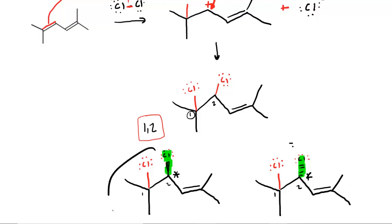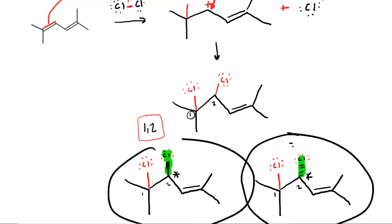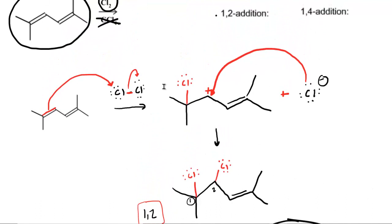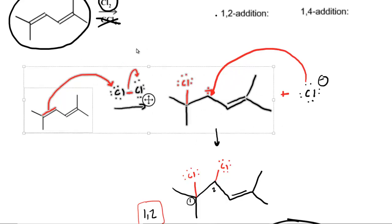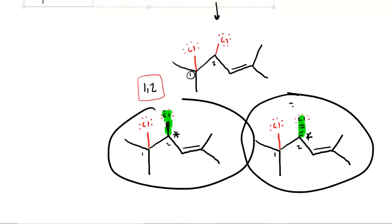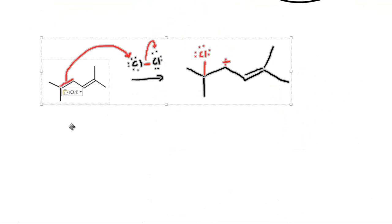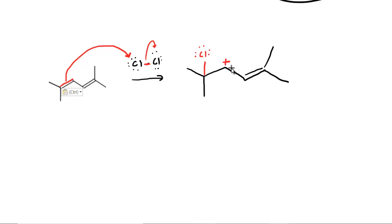We will now examine the 1,4 addition. For the 1,4 addition, we have the same initial first step, so we basically copy the intermediate from before. We claimed earlier that placing the positive charge at that carbon is more stable because it forms a resonance stabilized cation.